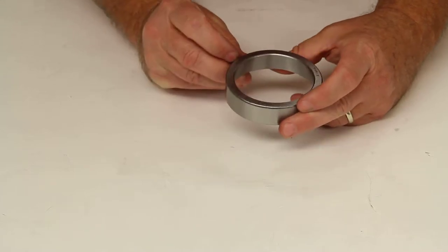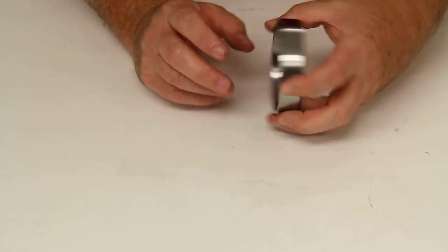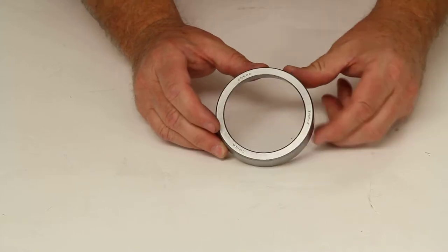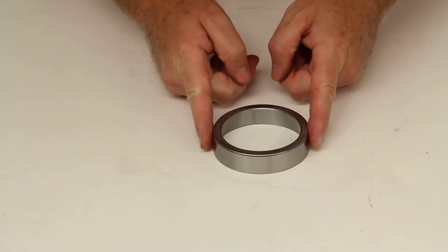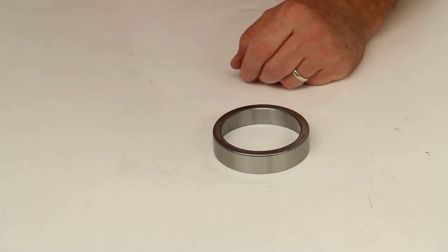The part number is stamped on here 25520. And the most important measurement on a bearing race is the actual outer diameter. That's what will match up with the bearing.